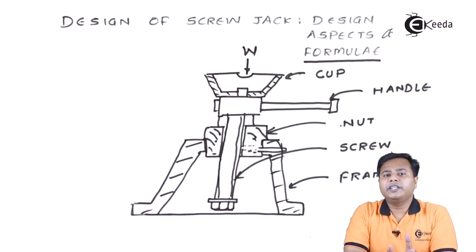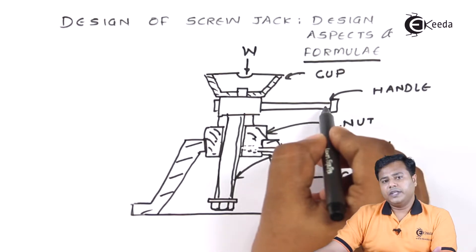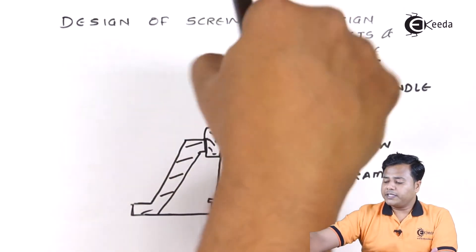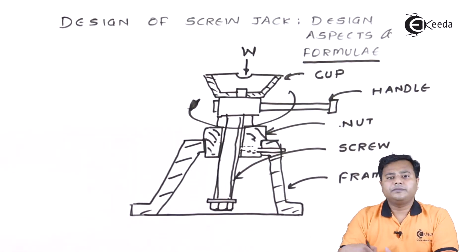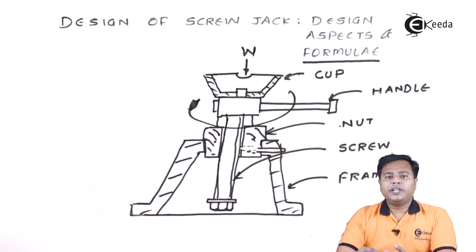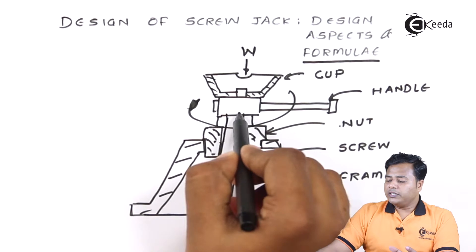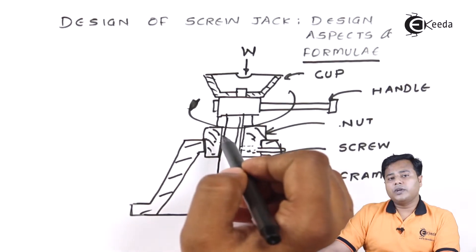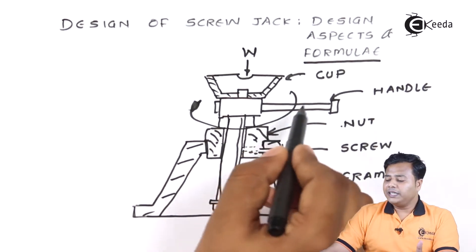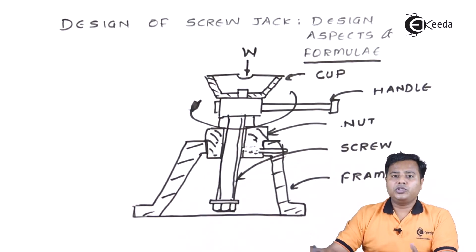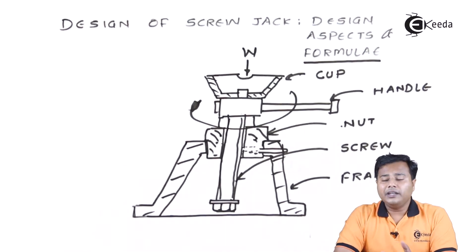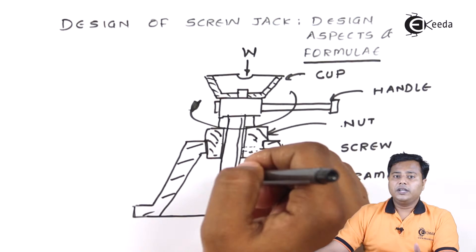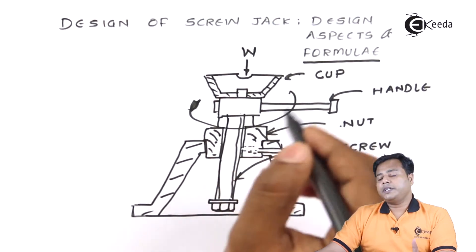How the functioning works is very simple — a handle is provided, which has the capacity to rotate in the vertical plane. After rotation, this will enable the screw to move upward or downward. So basically, the rotational motion of the handle is converted into the translational or rectilinear motion of the screw.